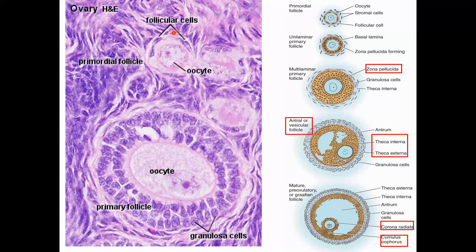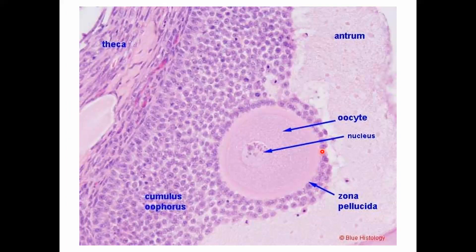In the microscopic view, we see the primordial follicle with the oocyte, and the primary follicle with an oocyte in enlarged view — two layers of granulosa cells present. In the Graafian follicle, the oocyte has a nucleus, the glycoprotein layer is the zona pellucida, surrounded by the corona radiata. The attachment of cells is the cumulus oophorus, and the large fluid space is the antrum.